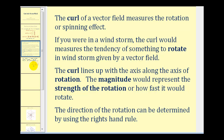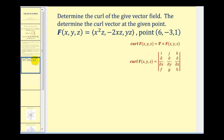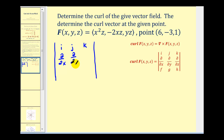Let's look at an example. We want to determine the curl of the given vector field and then determine the curl vector at the given point. We set up the three by three determinant: the first row is i, j, k. The second row has the partial derivative operators with respect to x, y, and z. The third row has the components of the vector field F: x squared z, negative two xz, and yz.